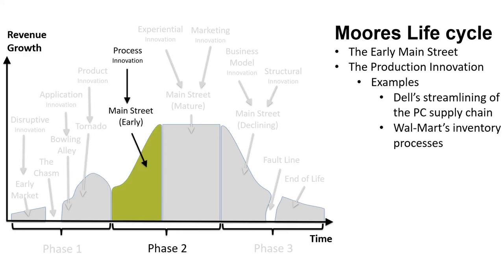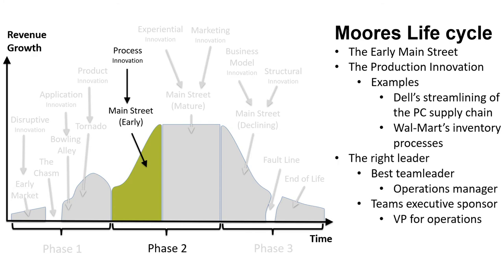Stage 5 – The Early Main Street: Process innovation is the aligning innovation type. It makes processes for established offerings in established markets more effective or efficient. Examples include Dell's streamlining of its PC supply chain and order fulfillment systems, and Walmart's refinement of vendor-managed inventory processes. The right team leader is an operations manager, and the ideal sponsor is the vice president for operations. The operations manager streamlines the value chain, while the VP for operations has sufficient power to support these optimizations.